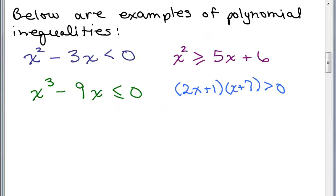Below are examples of polynomial inequalities. These are all nonlinear because they have X to some power more than one, but they're all positive power — so I have an X squared term or an X cubed term. In this last one, 2X plus 7 times X plus 7, that would be 2X squared. They also have less than, greater than, greater than or equal, or less than or equal symbols instead of just equals. That's what a polynomial inequality looks like.